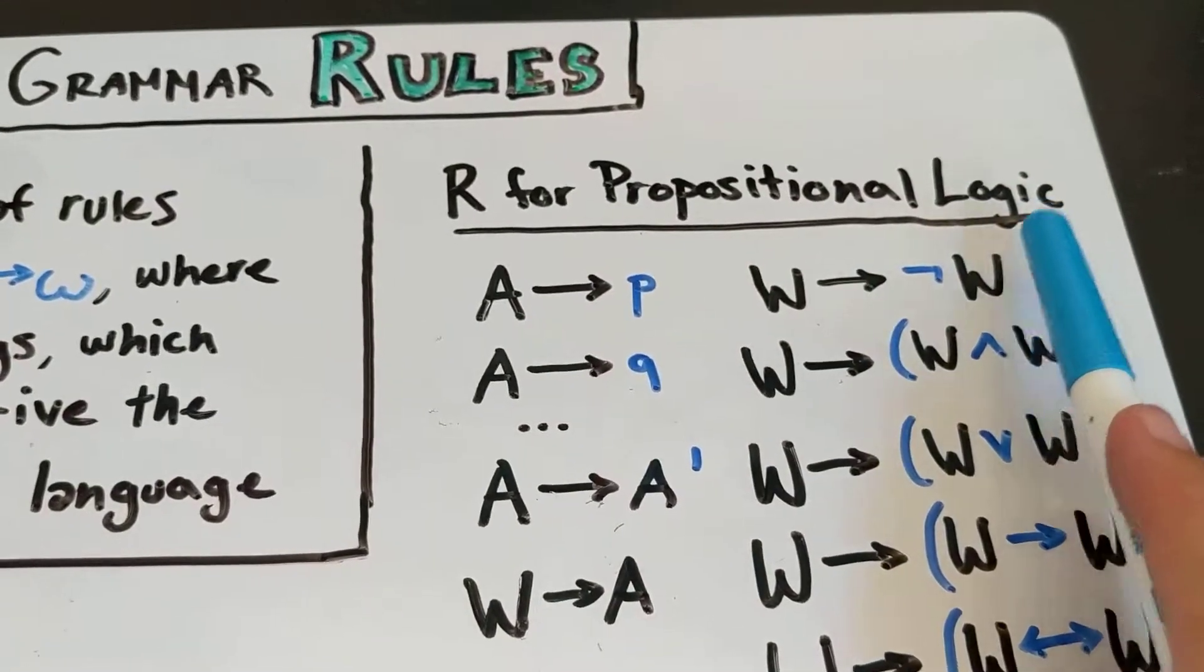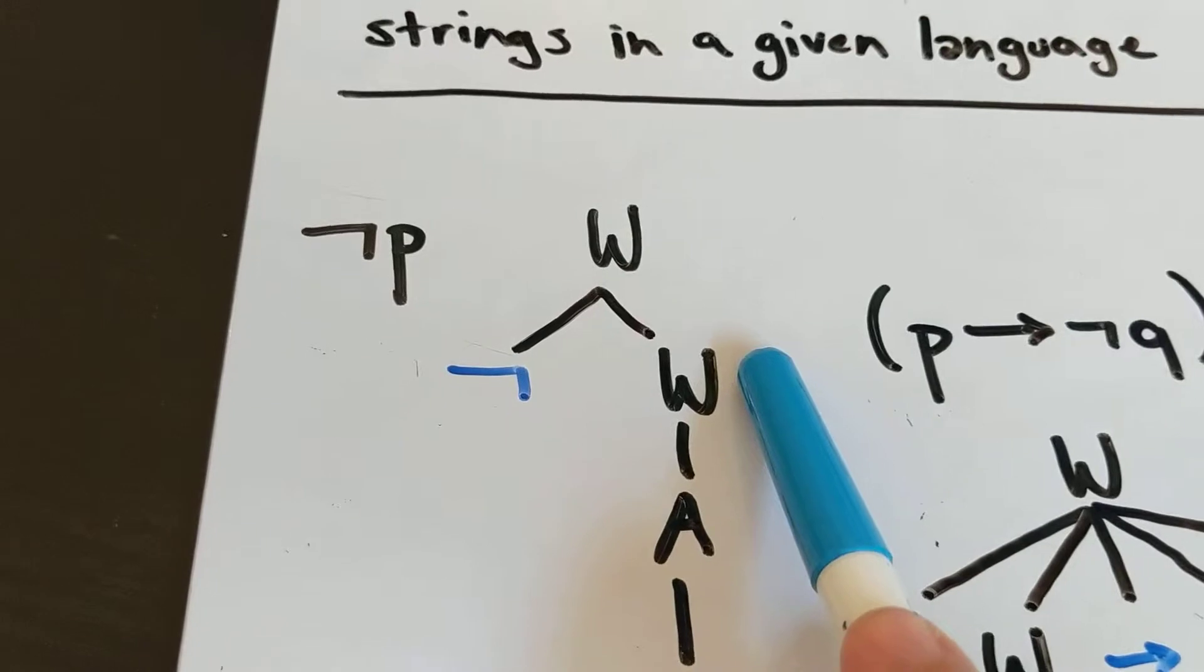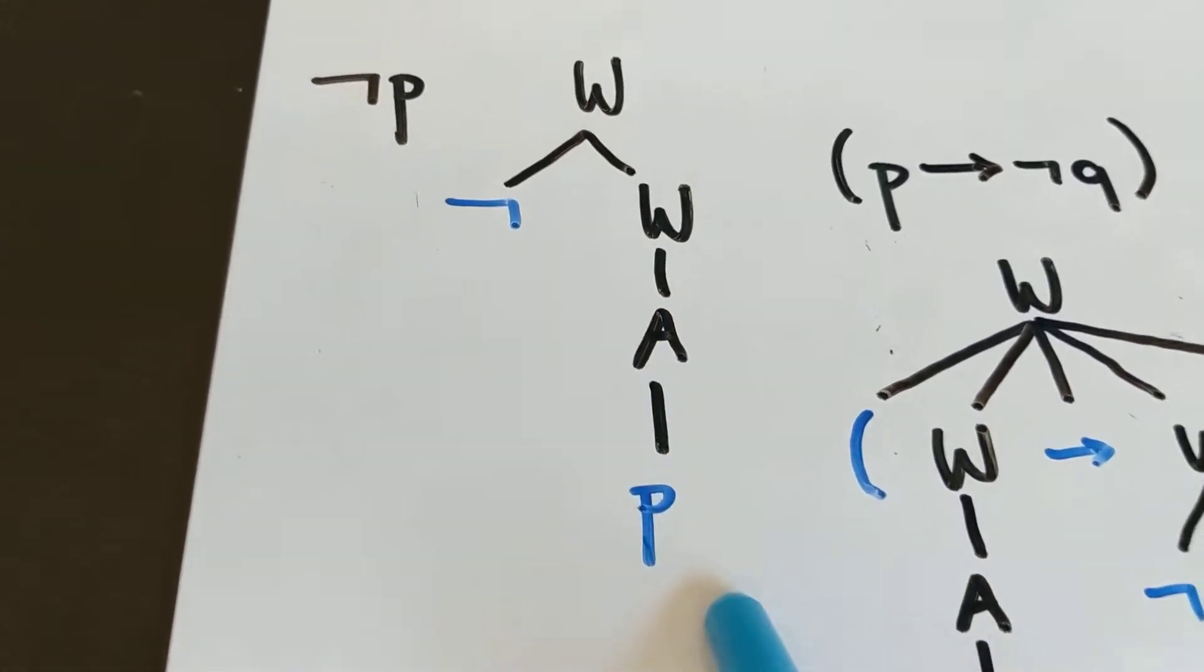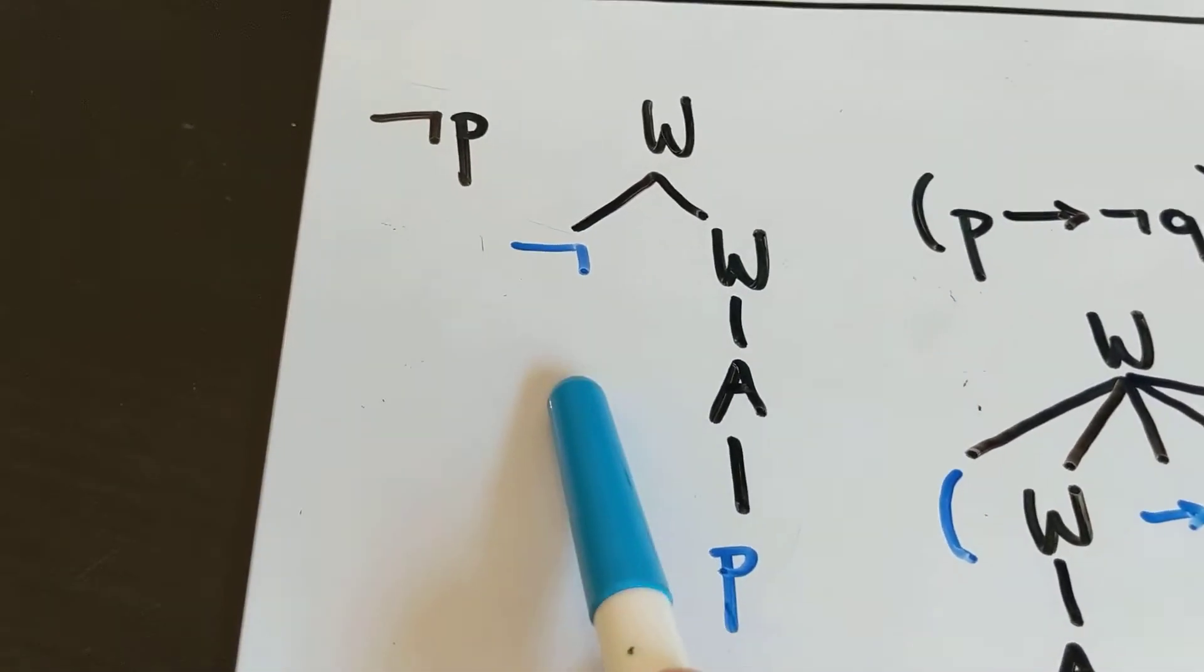And we have a rule over here that lets us break this into not W, and we have a rule that lets us break a W into a basic statement, and we have a rule that breaks a basic statement down to P. So we can determine that we have a well-formed formula here.